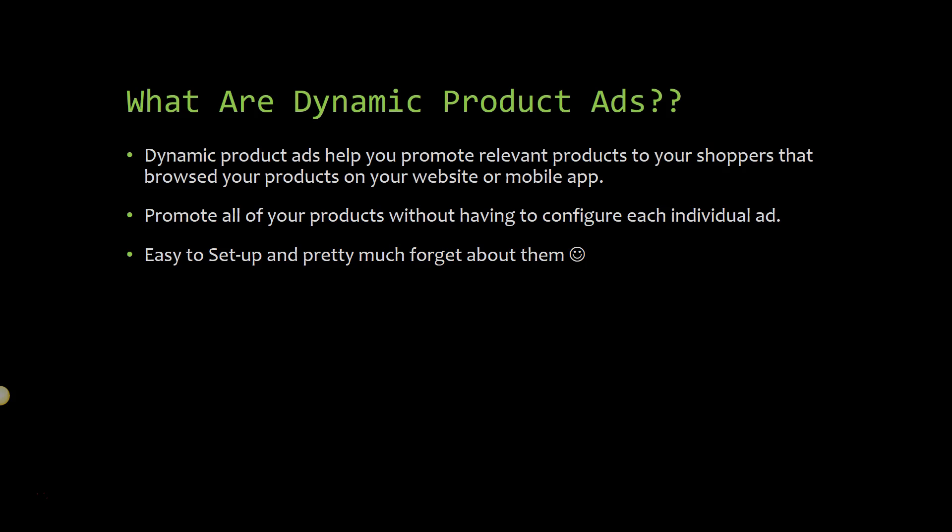When you run DPA ads you can retarget these people based on certain rules you set, such as certain products that they viewed or added to cart. Another great thing about dynamic product ads is that it actually allows you to promote all of your products without having to make an ad for each individual one. I have a general store with thousands of products and there's just no way I'd be able to promote all those products without doing a thousand different campaigns.